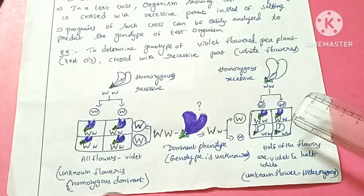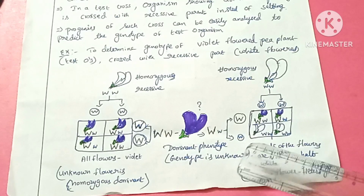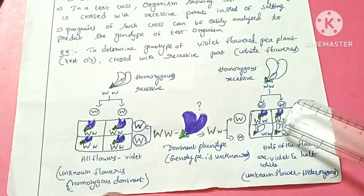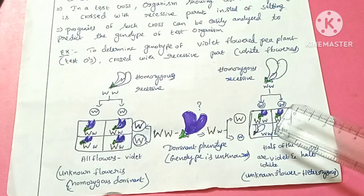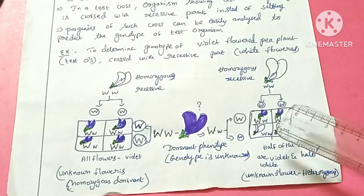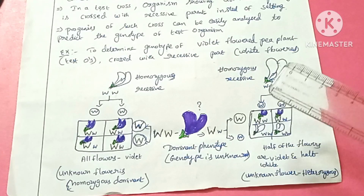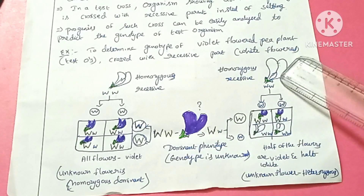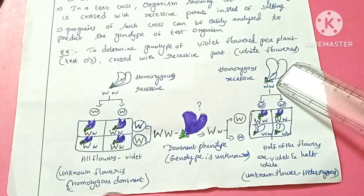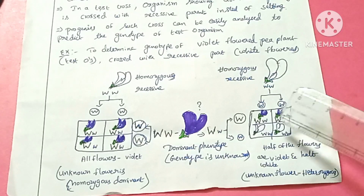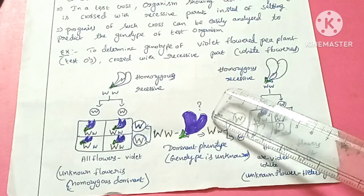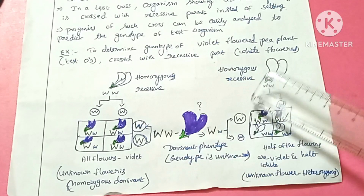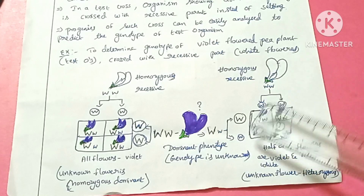The unknown plant is in a dominant condition but produces half white offspring. So we conclude that the unknown flowers are heterozygous. The probability is 50-50, that is 1 ratio 1. Looking at the genotypes: if the test plant is heterozygous dominant, its alleles are capital W, small w, and the gametes produced are capital W and small w. The recessive parent gametes are small w, small w.